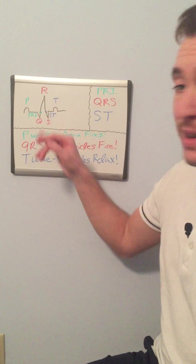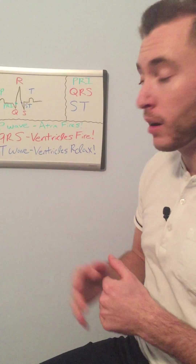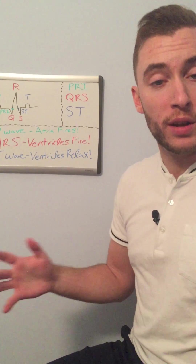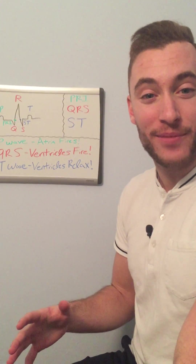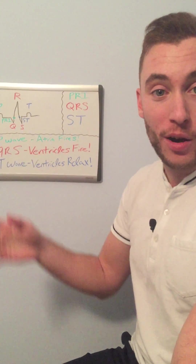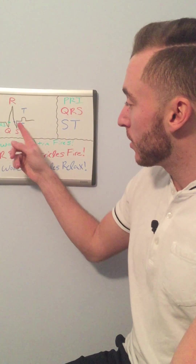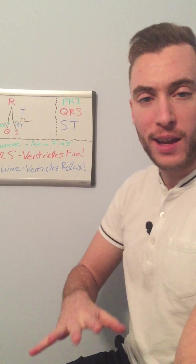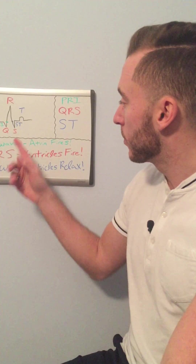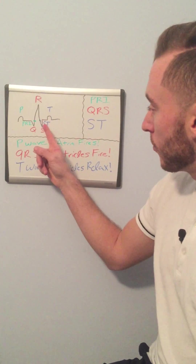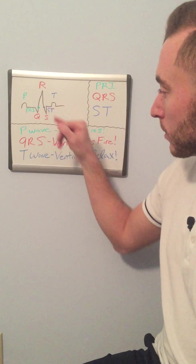This here is the ST segment. The ST segment is important because when we start to do 12-lead EKGs — that's another video — a paramedic will diagnose heart attacks right here in the ST segment. This represents a normal ST segment — it's flat. I just want you to be aware of where it is: it's the end of the S wave, right at that little corner, and then the beginning of the T wave, which is right there in that corner.